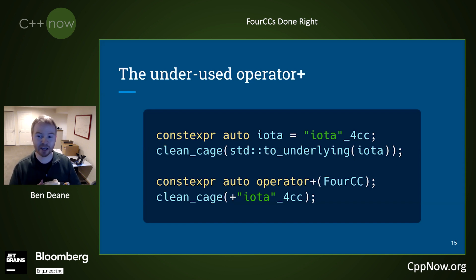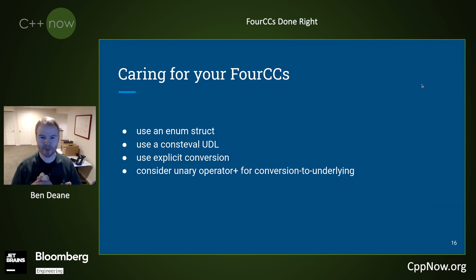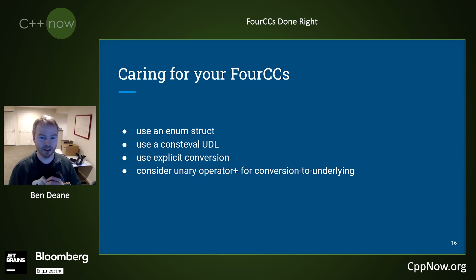In C++23, we get std::to_underlying. That's still quite verbose, so I quite like unary plus here — I think this might become conventional. So caring for your 4CCs involves using an enum struct, using a consteval UDL, using explicit conversion to get all that nice stuff. And I like unary plus for conversion to underlying.